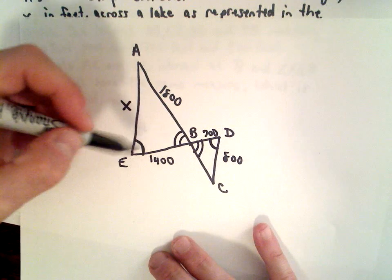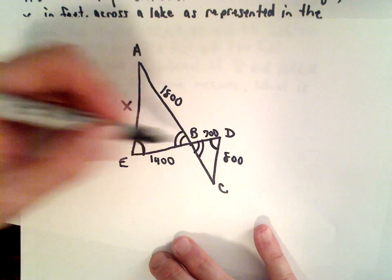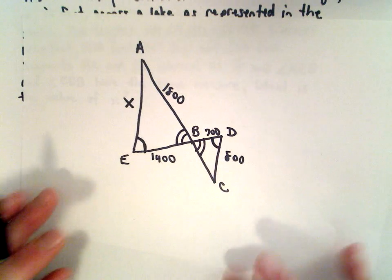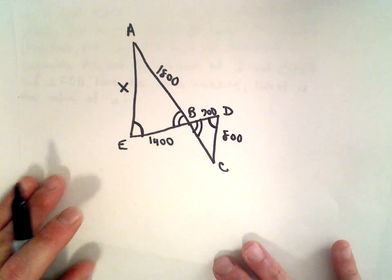So the idea is now, since two of the angles are congruent, we know that these triangles are similar, so we can set up a proportion to solve for the missing value.